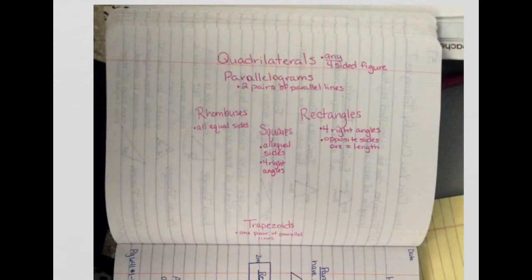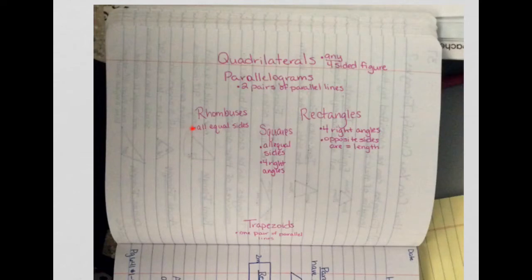On this red line right here you're going to write 'quadrilaterals' — just as a reminder, that is any four-sided figure. Right below that you're going to write 'parallelograms.' Parallelograms are a special kind of quadrilateral where they have two pairs of parallel lines.